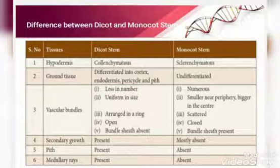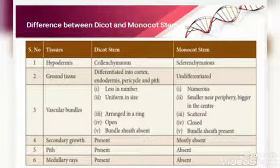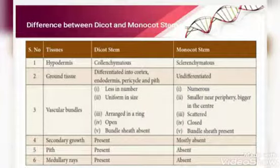The difference between monocot stem and dicot stem: hypodermis is made of collenchyma cells in dicot and sclerenchyma cells in monocot. Cortex is differentiated into three regions in dicot stem but does not differentiate in monocot stem. Vascular bundles are less in number in dicot and more in number in monocot; they are uniform in size and in ring-like arrangement in dicot, and scattered in monocot. Vascular bundles are open type in dicot and closed type in monocot. Secondary growth is present in dicot stem and mostly absent in monocot stem.